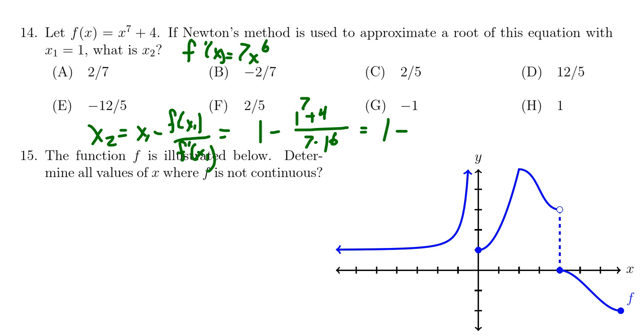So we get 1 minus, well, 1 to the 7th is 1. 1 to the 6th is likewise 1. So I'm just going to write the numerator as 5. 1 plus 4 is 5. And then 1 to the 6th, which is 1, times 7 is 7. So we get 1 minus 5 sevenths. We should take 7 sevenths minus 5 sevenths.